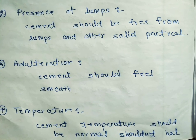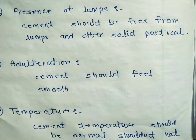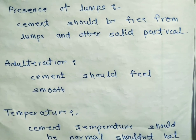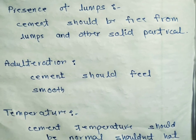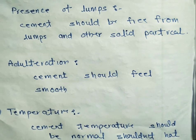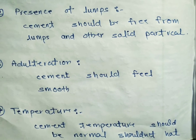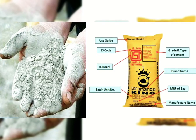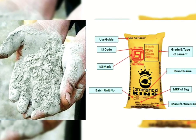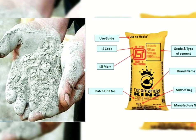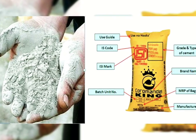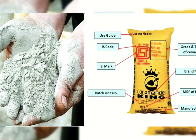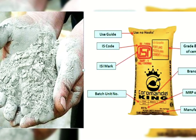The third test is the adulteration test. Cement should feel smooth whenever we take it in our hands. As we know, cement particles are very small. Whenever the particles are very small and smooth, it shows good quality of the cement.